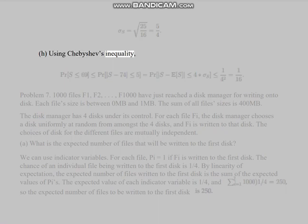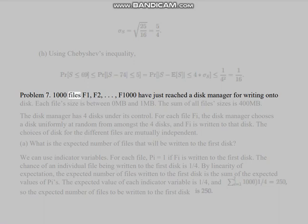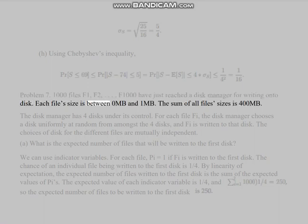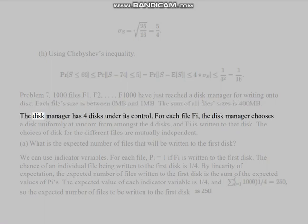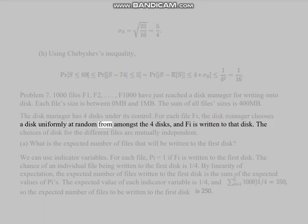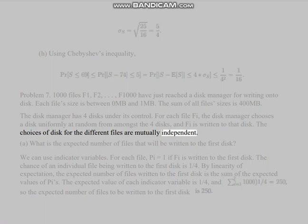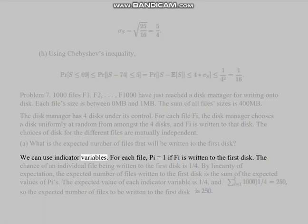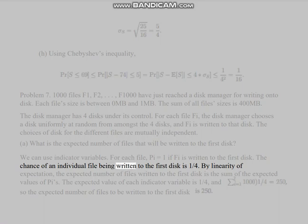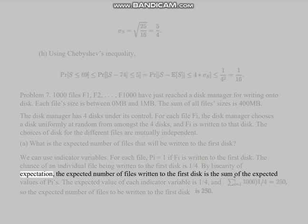Part (h): Using Chebyshev's inequality, we obtain the bound. Problem 7: 1000 files F1, F2, ..., F1000 have just reached a disk manager for writing onto disk. Each file size is between 0 megabytes and 1 megabyte. The sum of all file sizes is 400 megabytes. The disk manager has 4 disks under its control. For each file F_i, the disk manager chooses a disk uniformly at random from amongst the 4 disks, and F_i is written to that disk. The choices of disk for the different files are mutually independent. Part (a): What is the expected number of files that will be written to the first disk? We can use indicator variables. For each file, I_i = 1 if F_i is written to the first disk. The chance of an individual file being written to the first disk is one quarter. By linearity of expectation, the expected number of files written to the first disk is 250.